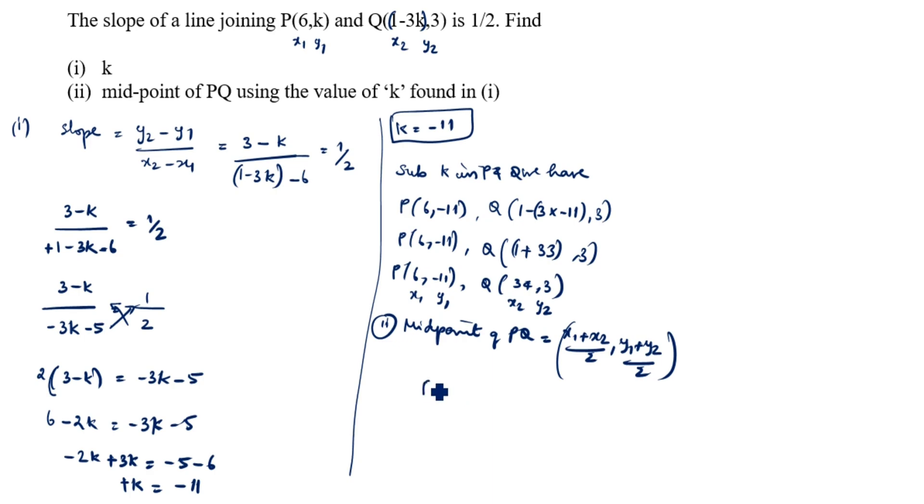What is x1? Midpoint of PQ is equal to (6+34)/2 comma (-11+3)/2. So 34 plus 6 is 40 divided by 2 comma -11 plus 3 is -8 divided by 2. So the midpoint of PQ is equal to (20,-4).